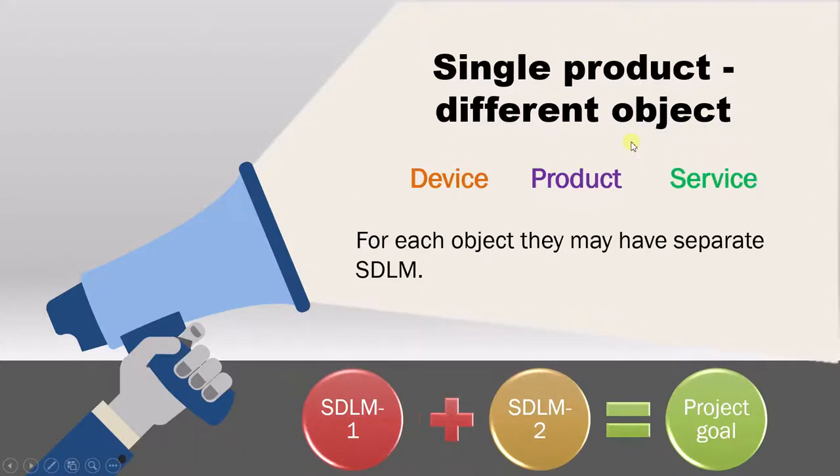Now onto the second example. Here you have a single product but different objects. However, you are still combining different models to achieve project goal. Suppose a company creates a device, develops a product, and provides a service. For each of these objects, they can use separate software development lifecycle models.